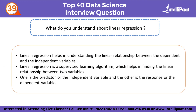What do you understand about linear regression? In simple linear regression, there is one independent variable and one dependent variable — for example, experience versus salary. Linear regression helps in understanding the linear relationship between dependent and independent variables. As experience increases from three to five years, salary gradually increases. Linear regression is a supervised learning method that finds the linear relationship between two variables: the predictor (independent variable) and the response (dependent variable).